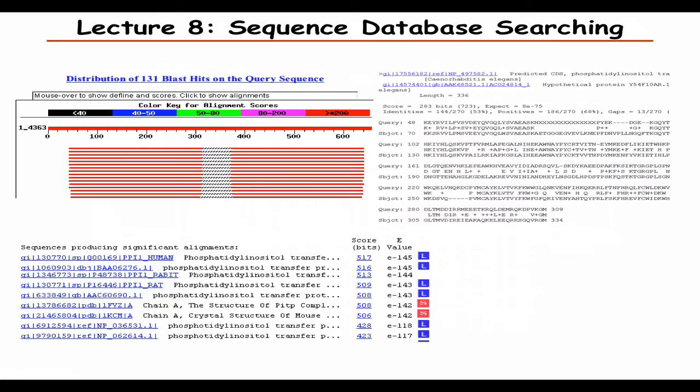An extension of sequence alignment is to search a database with a sequence — comparing one sequence sequentially to a whole database of sequences. You've probably heard of one of the most popular ways to do this, which is BLAST. Stuart is going to tell you more in detail about how to interpret the results, what the expectation value means, and how to look at the sequence alignment.